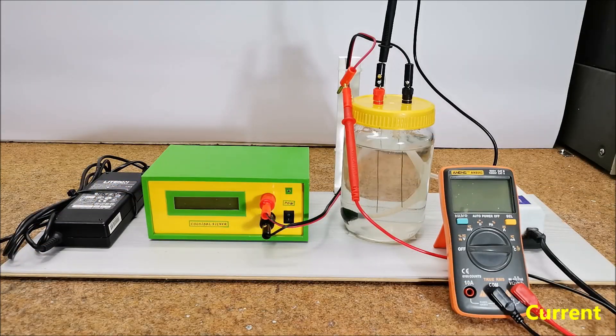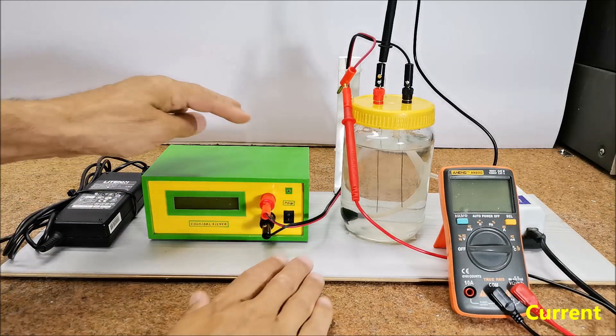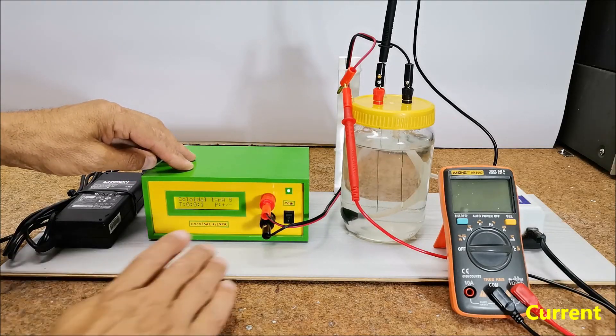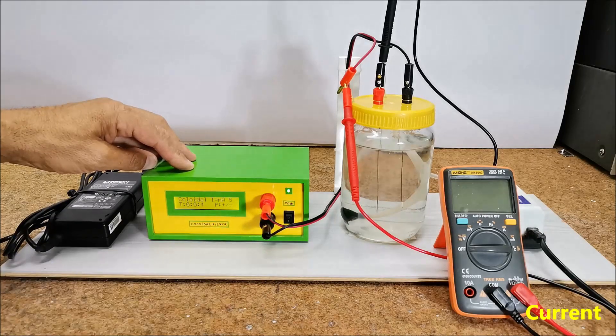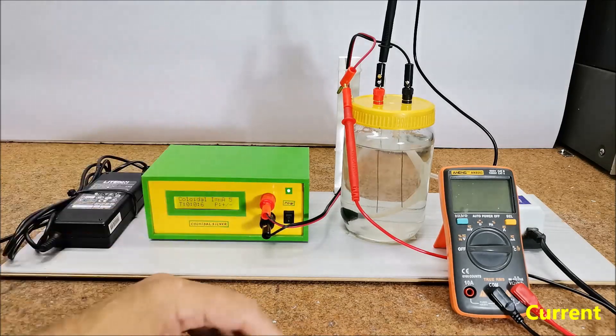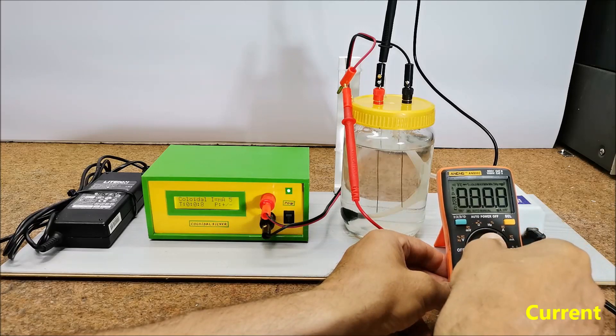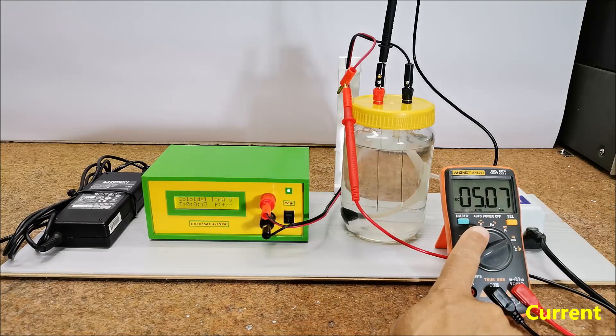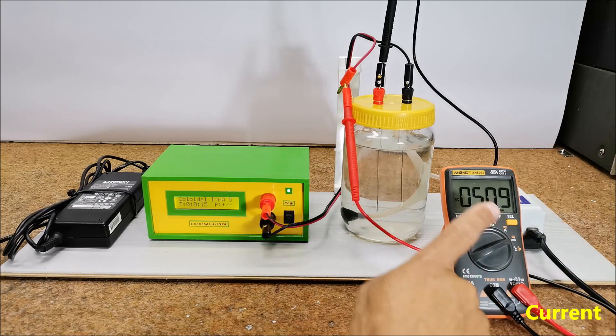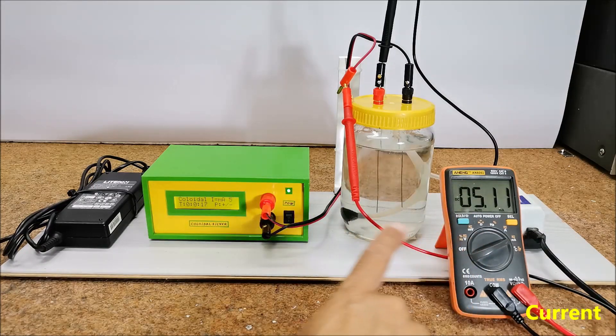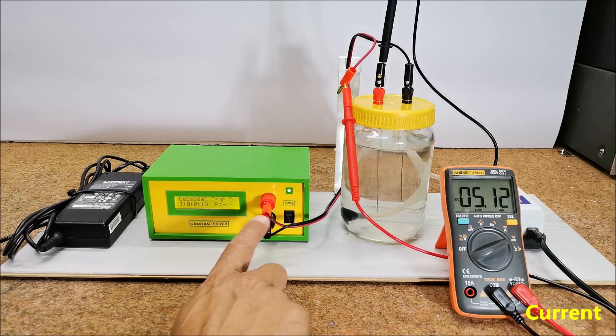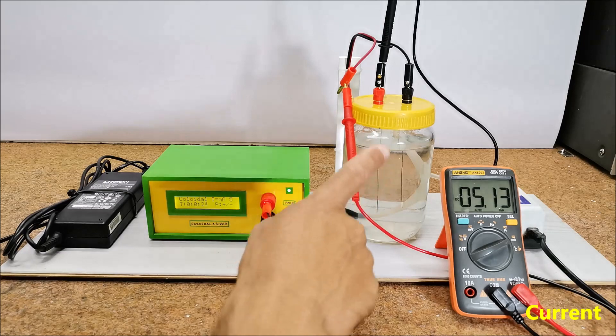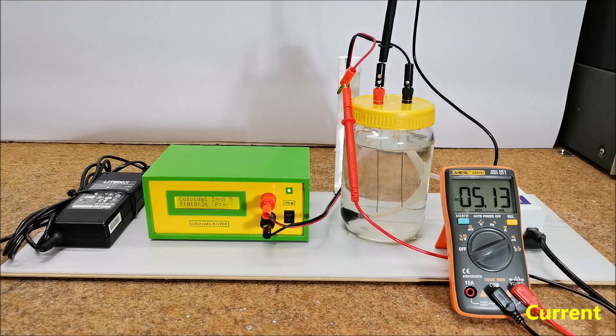Now we can check the current in the circuit using an ammeter. We choose 5mA on the device. As can be seen on the instrument, the value of the current in the circuit is the same as the one shown on display, which means that the connection is okay and the electrolysis, actually the silvering of the water, has begun.